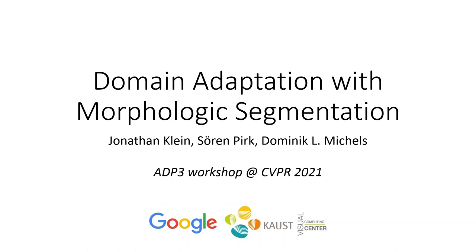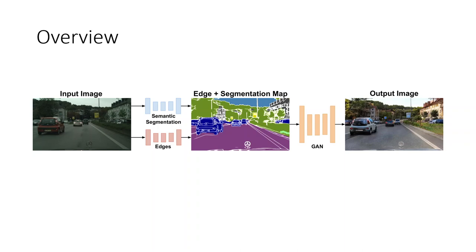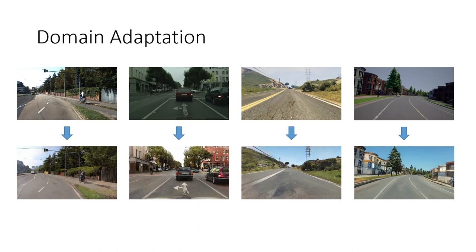We present a novel domain adaptation framework that uses morphologic segmentation to translate images from arbitrary input domains into a uniform output domain. An input image is transformed into the output image using our framework. We first generate an edge plus segmentation map as intermediate representation to then generate the output image in the target domain with an image-to-image translation GAN.